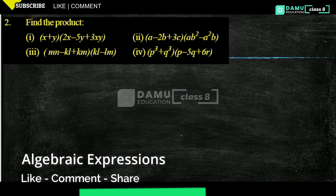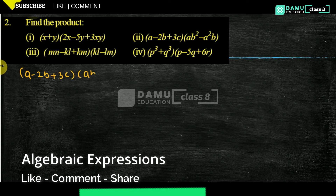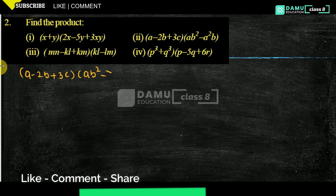Here our second one is: (a - 2b + 3c) into (ab² - a²b).